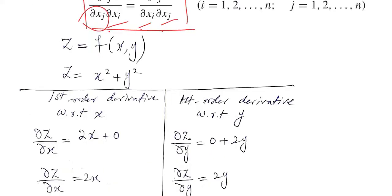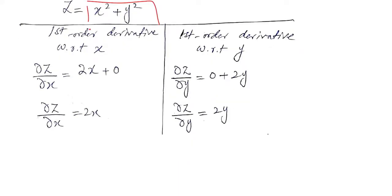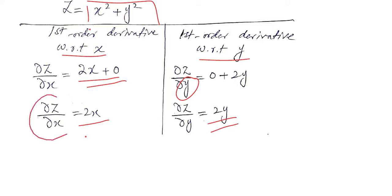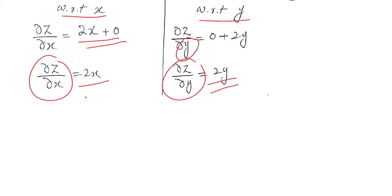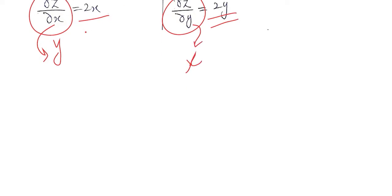We can understand this through a numerical example where x and y combined determine the value of z, so z is a function of x and y. The specific form is z = x² + y². We separately solve the first-order derivatives: differentiating with respect to x gives 2x, and differentiating with respect to y gives 2y. Now we will differentiate again but with respect to the other variable.